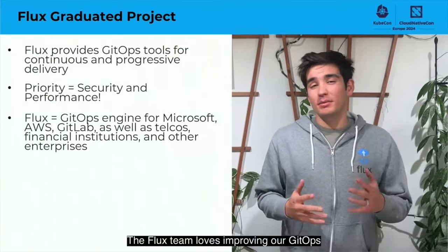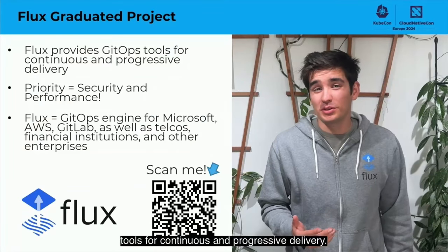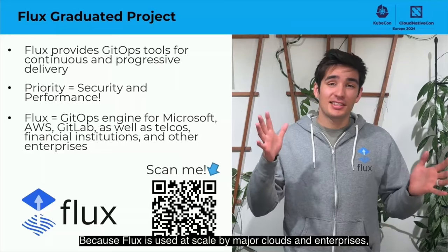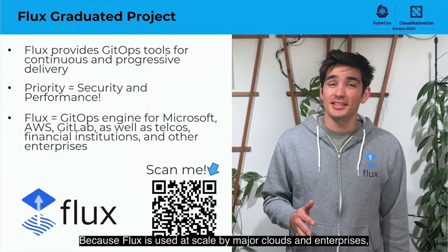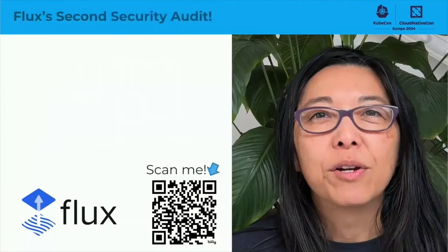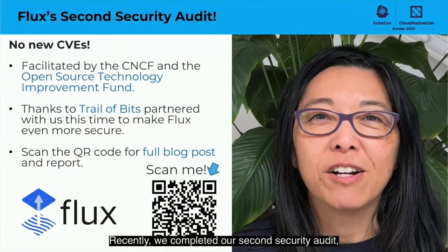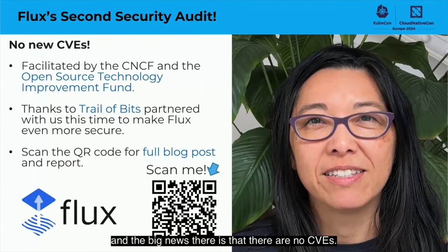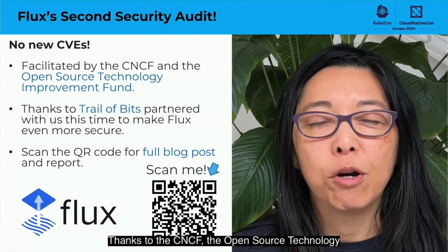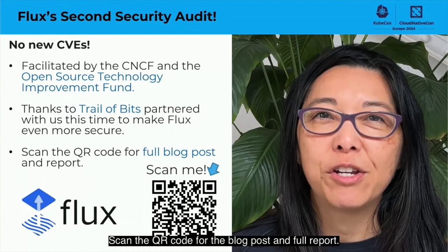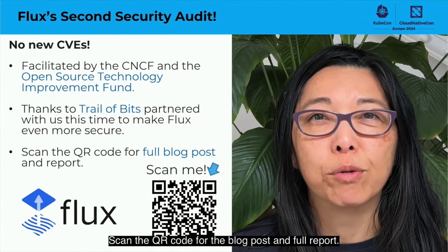Here's the Flux project update. The Flux team loves improving our GitOps tools for continuous and progressive delivery. Because Flux is used at scale by major clouds and enterprises, security and performance are really important to us. Recently, we completed our second security audit, and the big news is that there are no CVEs. Thanks to the CNCF, the Open Source Technology Improvement Fund, and Trail of Bits for keeping Flux safe. Scan the QR code for the blog post and full report.